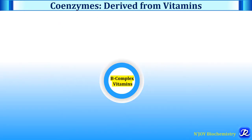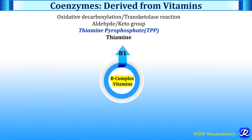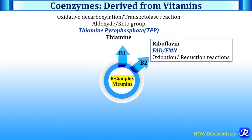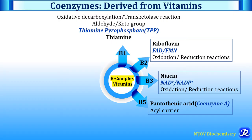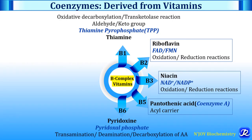Let's see various coenzymes derived from B complex vitamins. Vitamin B1, thiamine, has the coenzyme thiamine pyrophosphate, required for oxidative decarboxylation and transketolase reactions. B2, riboflavin, has coenzymes FAD and FMN, required for oxidation-reduction reactions. Vitamin B3, niacin, has coenzymes NAD+ and NADP+, required in oxidation-reduction reactions. Vitamin B5, pantothenic acid, has coenzyme A as an acyl carrier. Vitamin B6, pyridoxin, has coenzyme pyridoxal phosphate, required for transamination, deamination, and decarboxylation of amino acids.